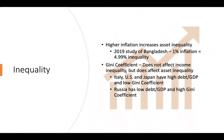We see that Italy, the US, and Japan have a high debt-to-GDP ratio while maintaining a low Gini coefficient. The debt-to-GDP ratio measures all goods and services produced by the country and is used to indicate whether a country can pay back its debts. Japan most recently had a very high debt-to-GDP and had a default on their debt. Russia, on the other hand, has a low GDP and high Gini coefficient.